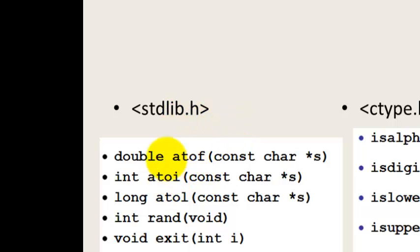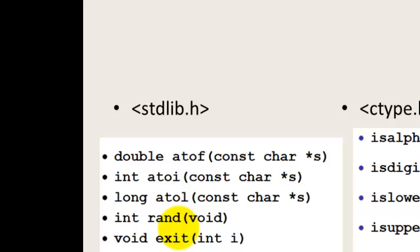In stdlib.h header file, the functions include: atof — string to float conversion; atoi — string to integer; and string to long. There is a conversion that takes place. There is also rand, used for generating random numbers, and exit — for coming out of the program.